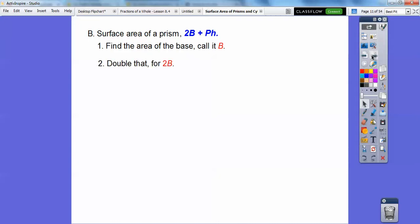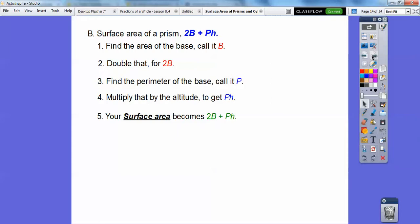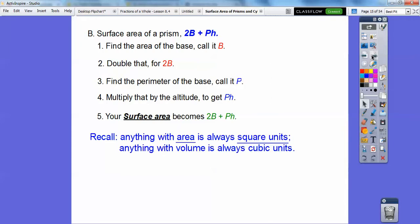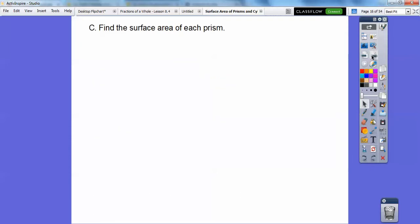So find the area of the base, double it, find the perimeter of the base and then multiply that times the altitude. Now your surface area is when you add those numbers together. Anything that has area is square units. Anything with volume is cubic units. So here today is square units.